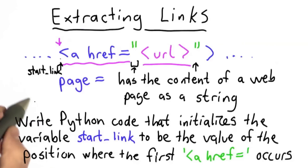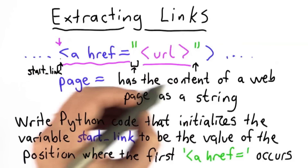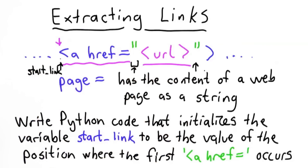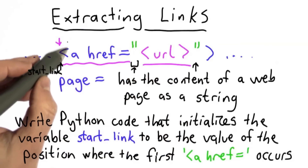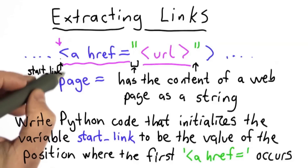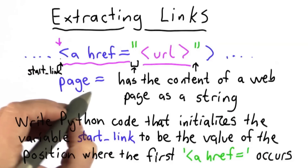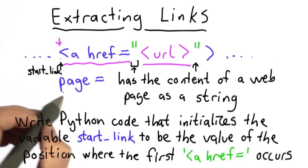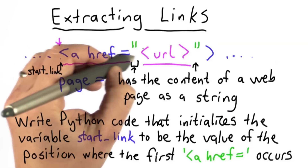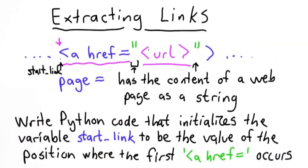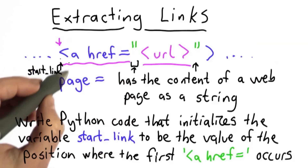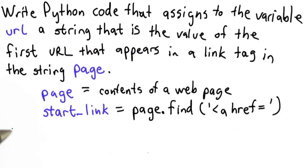Here's the answer. What we have to do is find these two double quotes. We know that we want to start looking from start_link — we can't start from the beginning of the page. So we want to use find on page, passing in the double quote, which is what we're looking for, starting from the start_link position.